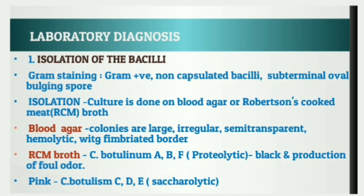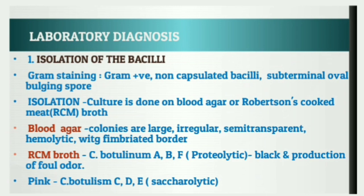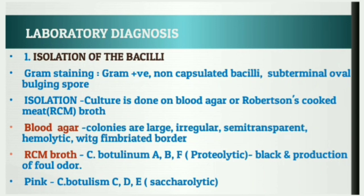For laboratory diagnosis of botulism, we should isolate the bacilli and demonstrate the toxin. On gram staining, smears from suspected food or feces reveal gram-positive non-capsulated bacilli with sub-terminal oval bulging spores. This bacteria is motile by peritrichous flagella. Isolation using culture can be performed on blood agar or Robertson's Cooked Meat broth. On blood agar, colonies are large, irregular, semi-transparent, and hemolytic with frillated borders.